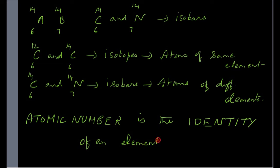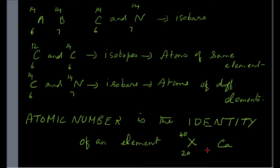C-6-12 and C-6-14 are isotopes because they are atoms of the same element. C-6-14 and N-7-14 are isobars — they are atoms of different elements. From this, one important idea: the atomic number is the identity of an element. So when given an element X-20-40, to find out what element it is you look at the atomic number 20, which belongs to calcium.